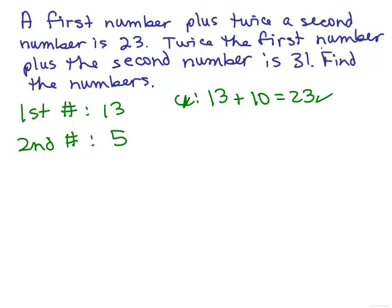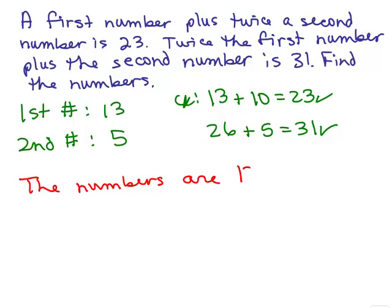And then it also says twice the first number. The first number is 13, so twice that is 26 plus the second number, which is 5. That adds up to 31, and yes, it was supposed to add up to 31. So these must be the correct numbers. The numbers are 13 and 5.